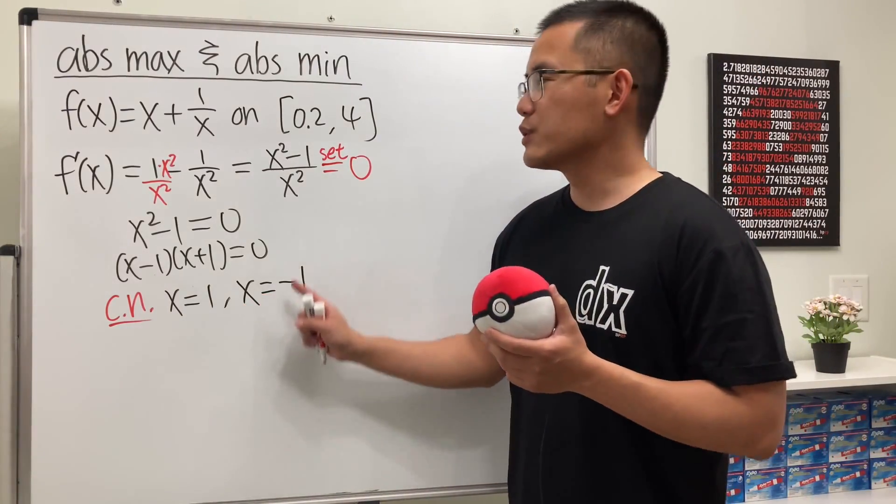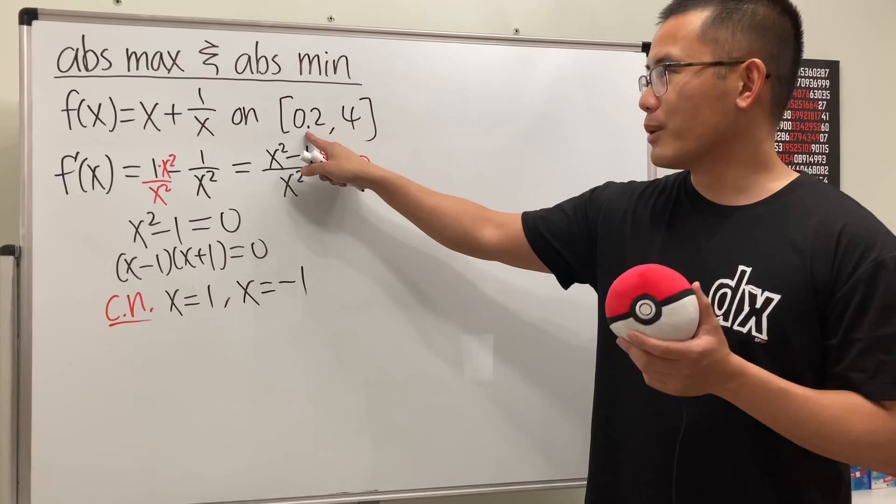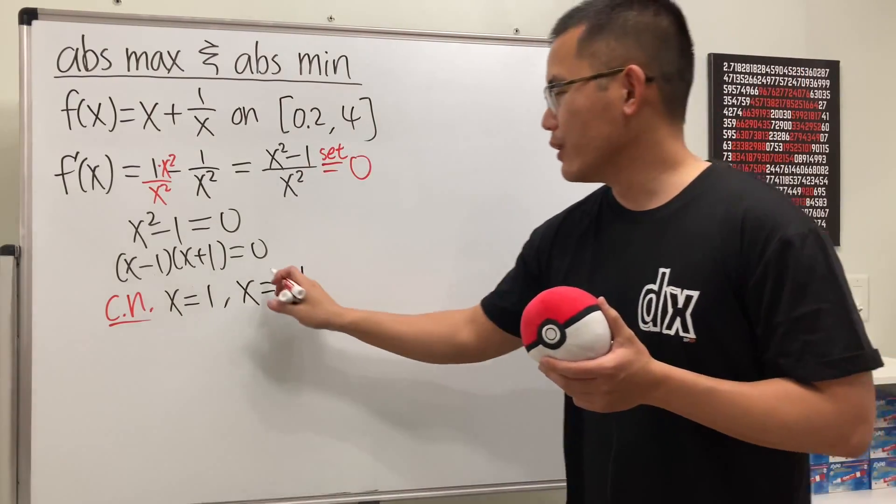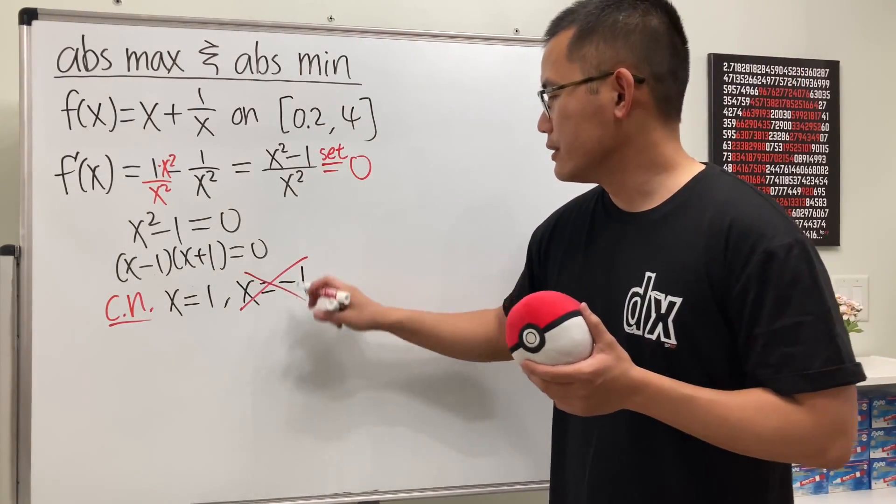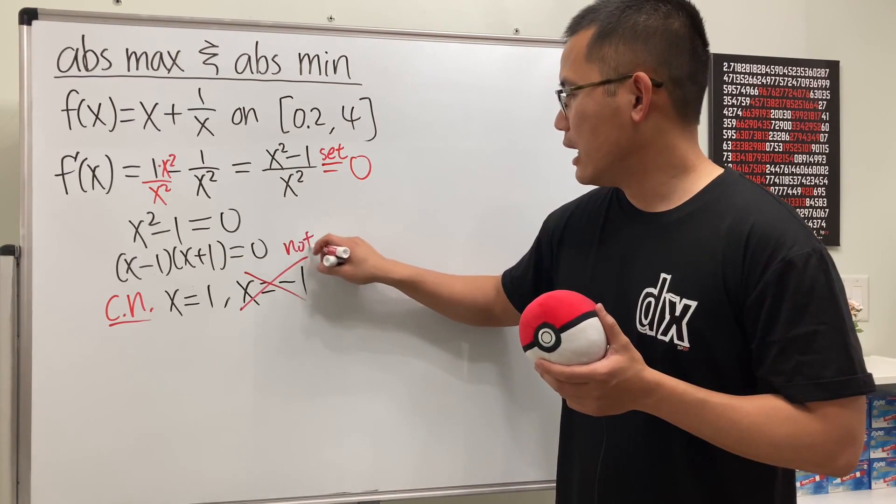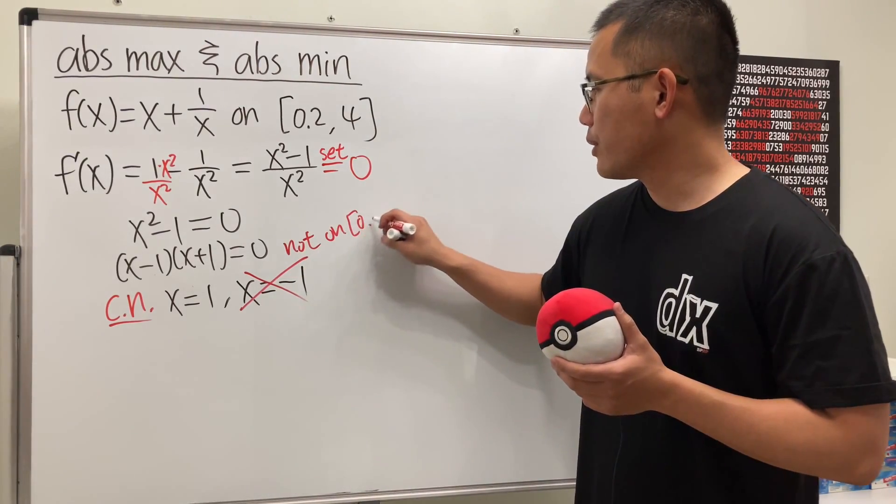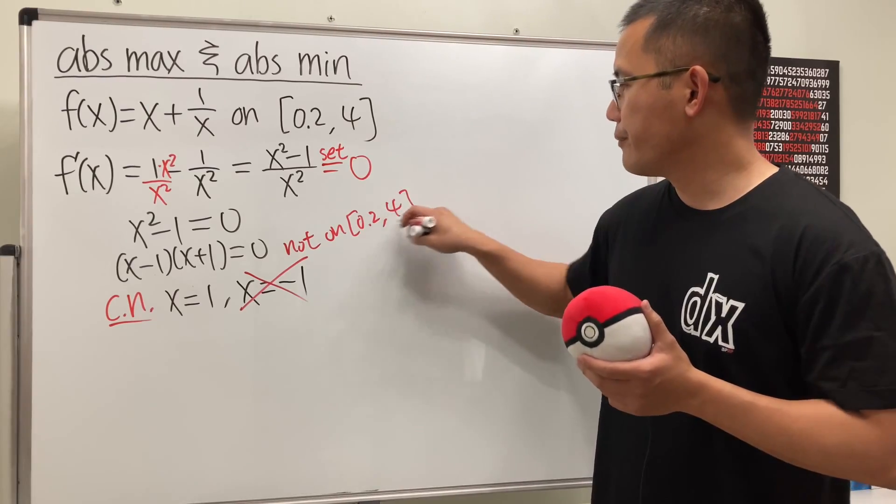We don't need this one because we just care about the interval 0.2 to 4. So this right here is not on the interval of 0.2 to 4.